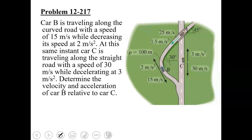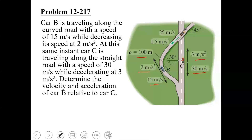We'll look at one of the problems from the exercise. Car B is traveling along a curved road having a radius of 100 meters, traveling at a speed of 15 meters per second and decelerating at 2 meters per second squared. Car C is traveling along a straight road with a speed of 30 meters per second and decelerating at 3 meters per second squared.